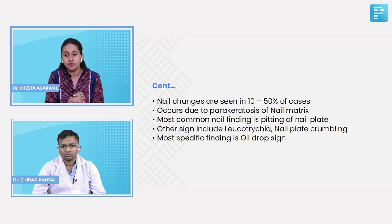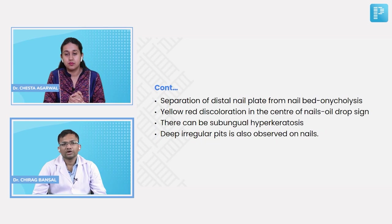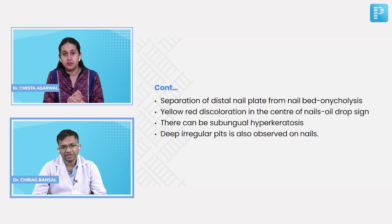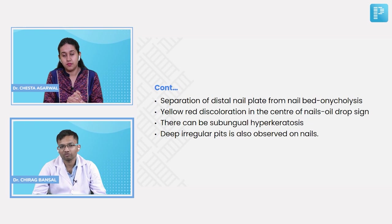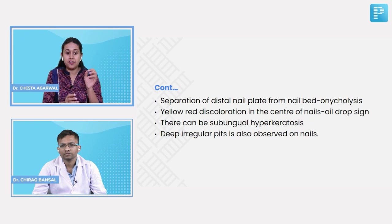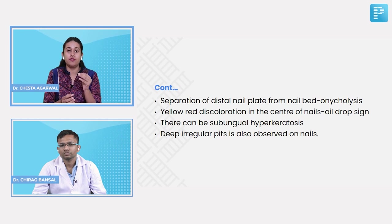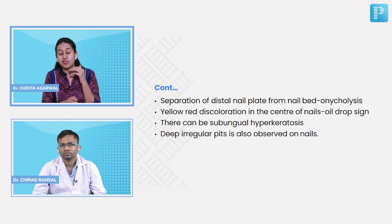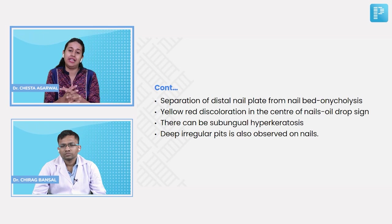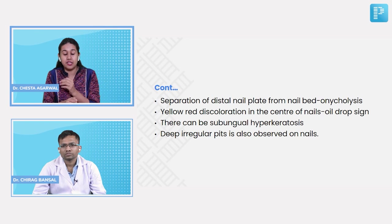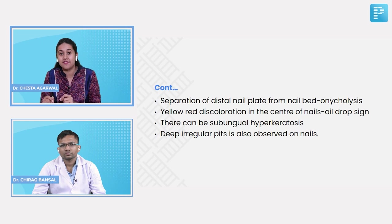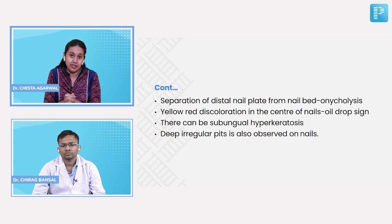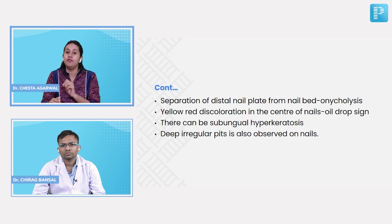Separation of the distal nail plate from the nail bed — known as onycholysis — can be seen. There is yellowish red discoloration in the center of nails, which is the oil drop sign (the most specific feature). Deep irregular pits are also observed, which is the most common feature of nail psoriasis.